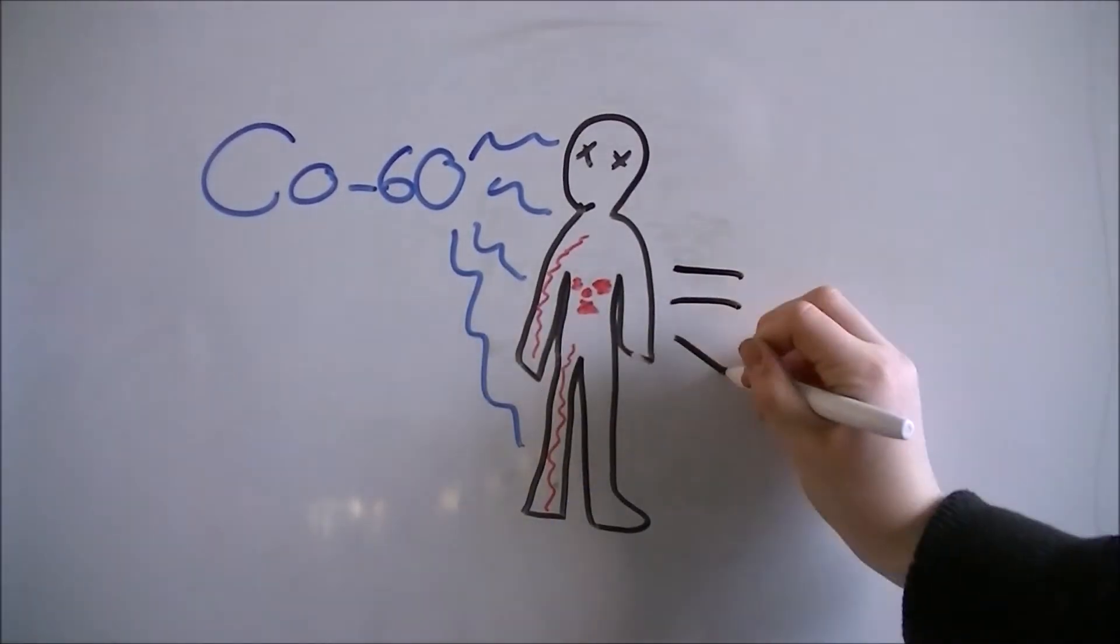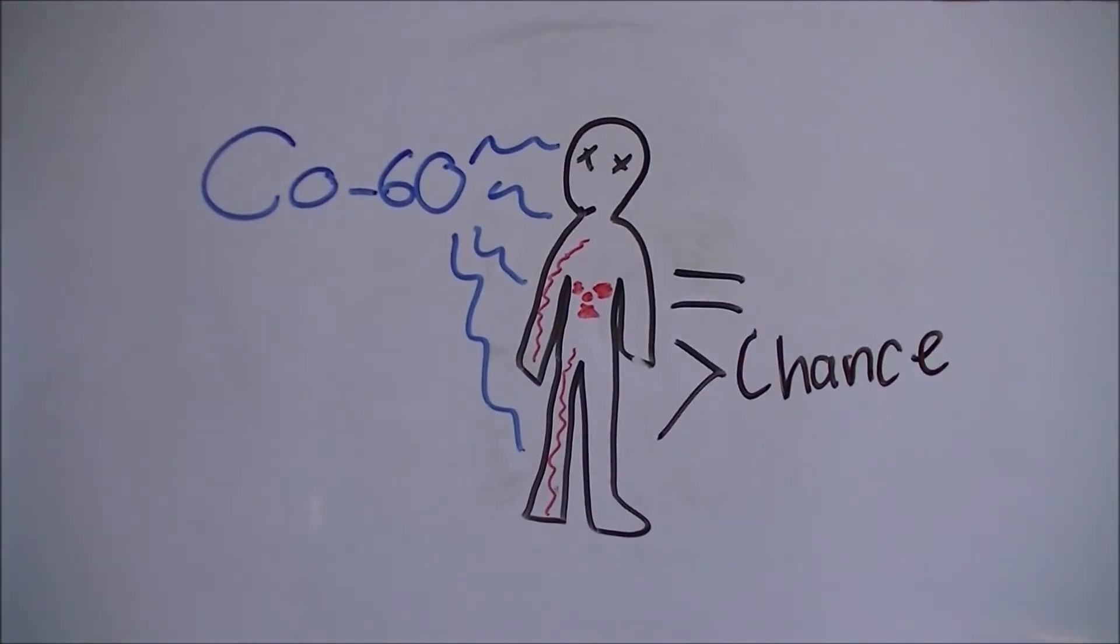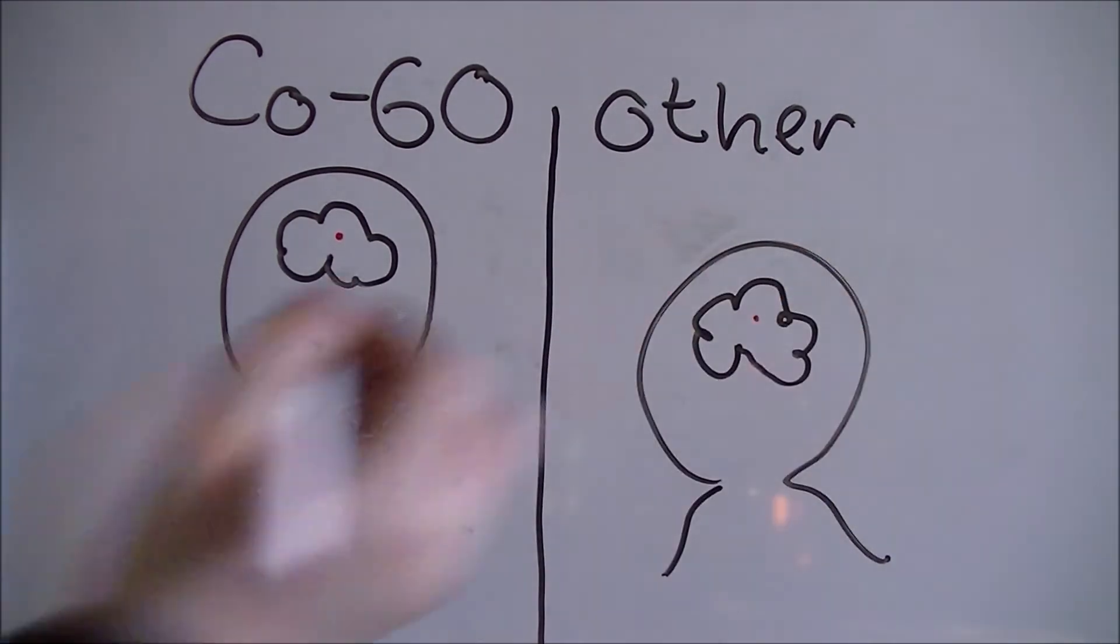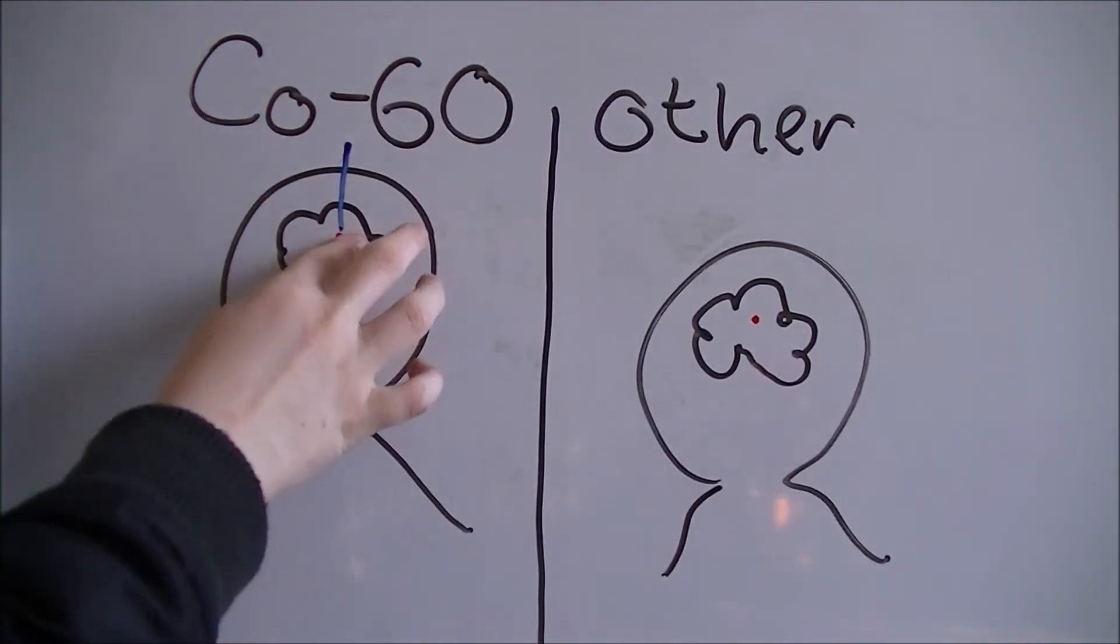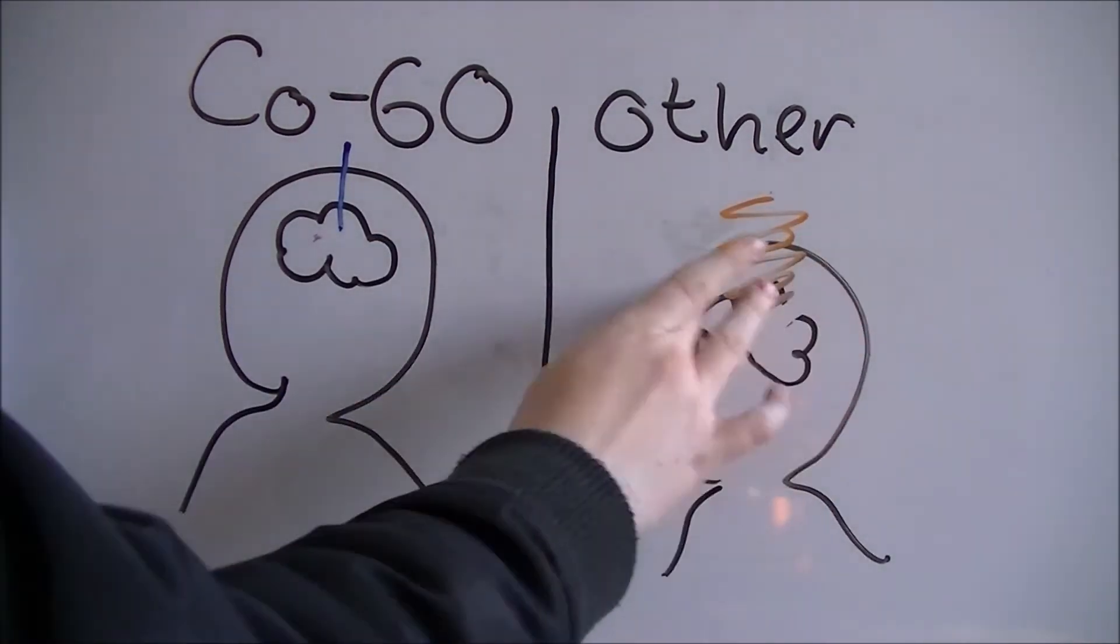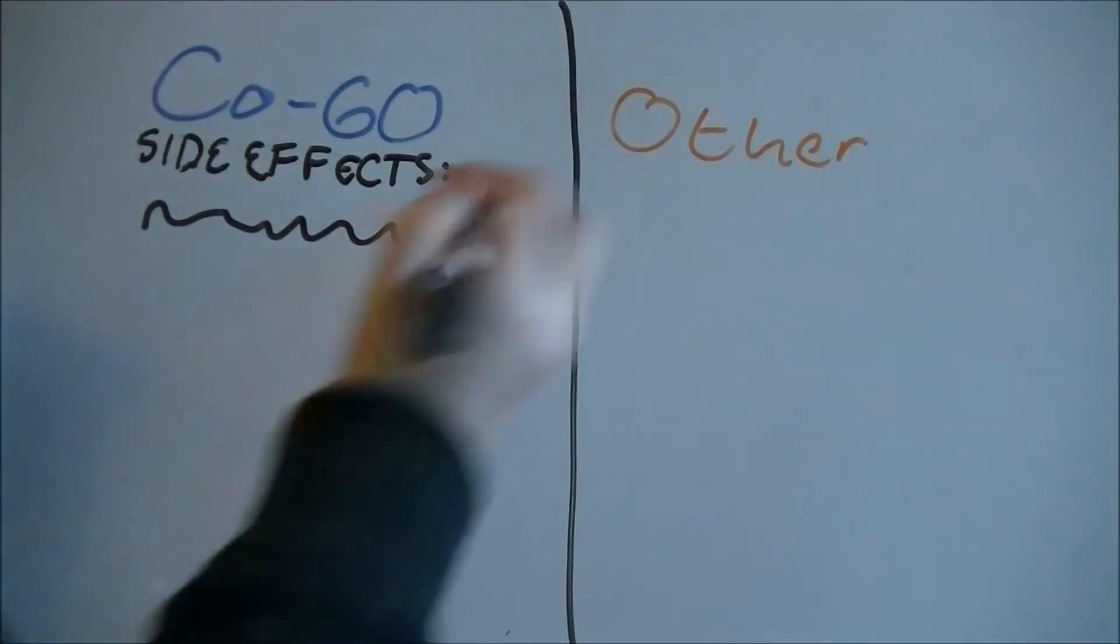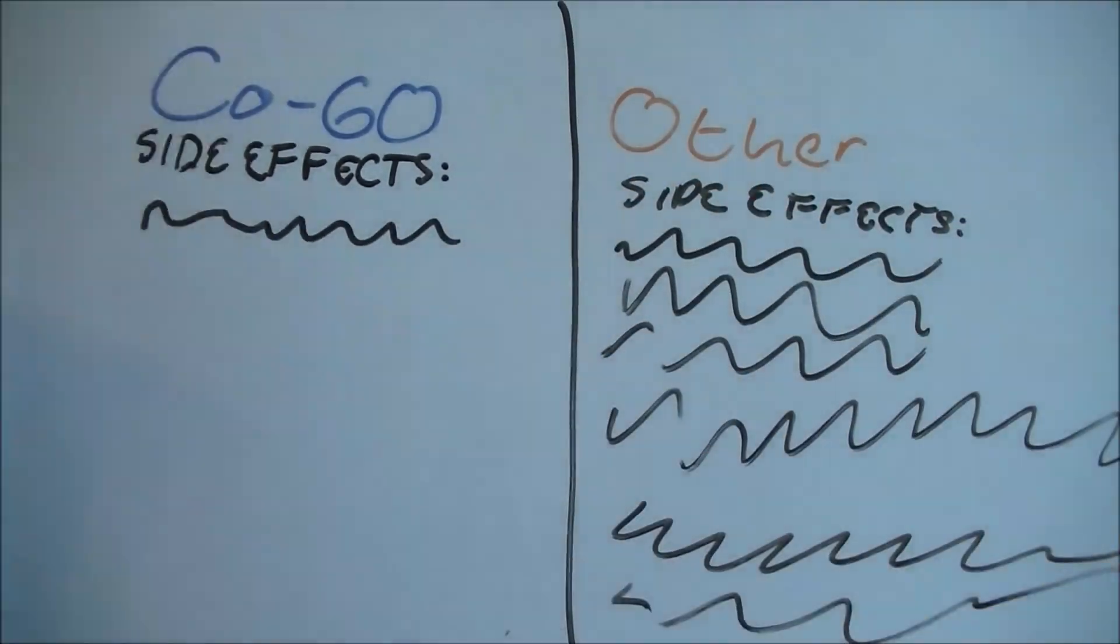However, the likelihood of this happening is low if safety precautions are followed. Cobalt-60 is the most precise and advanced form of radiotherapy and can be used on brain treatment since it gives a higher dosage of radiation with limited damage to surrounding tissue. It also has fewer side effects than conventional radiotherapy. For example, it is painless and is effective in simple design.